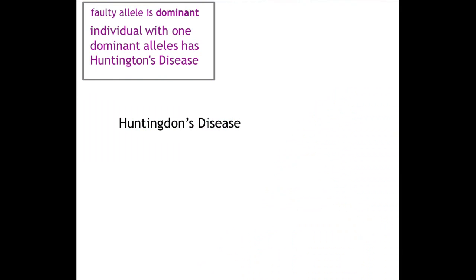Hi and welcome to my 8th video in the series about genes. Today we are looking at Huntington's disease. Huntington's is a disease that affects thousands of people in the UK, and it is caused by a dominant allele, which unfortunately means you only need one of those alleles for the disease to be expressed. So technically there is no such thing as a carrier with Huntington's disease — you are either a sufferer or you are healthy.